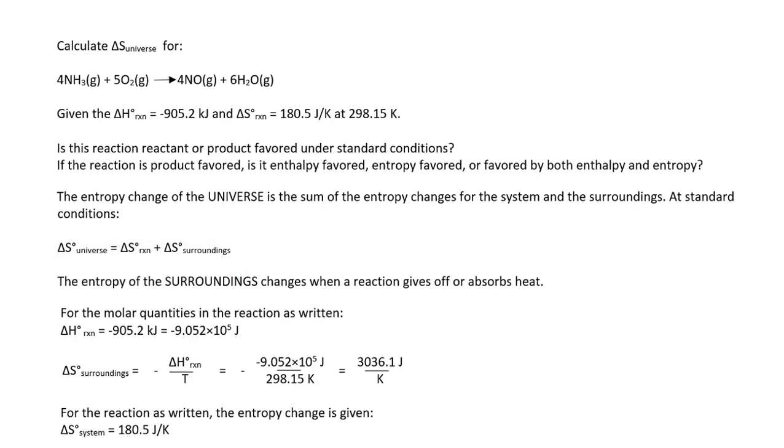We have the ΔS_reaction given here. We need to calculate the ΔS_surroundings. To calculate ΔS_surroundings, we're going to use the same equation as we did in the previous video: negative ΔH_reaction divided by T. Substituting the values in and making sure we convert kilojoules to joules, we end up with a ΔS_surroundings of positive 3036.1 joules per kelvin.